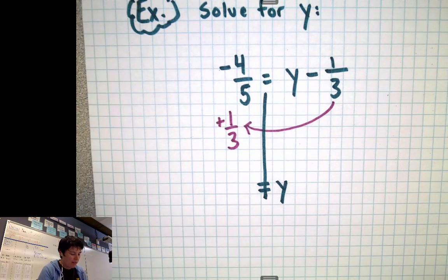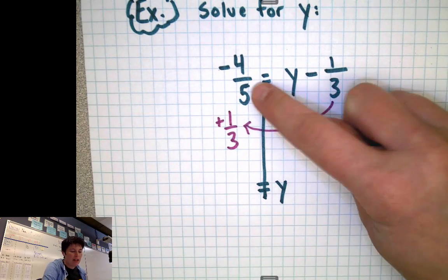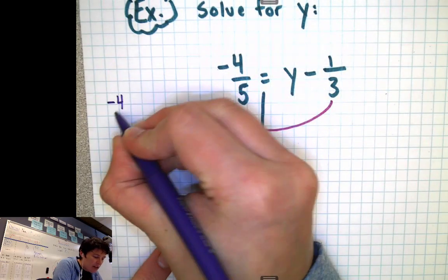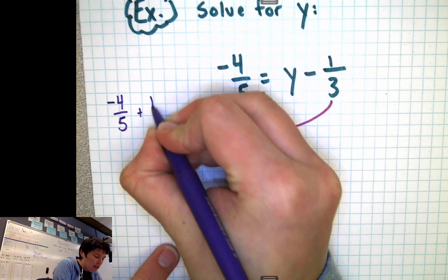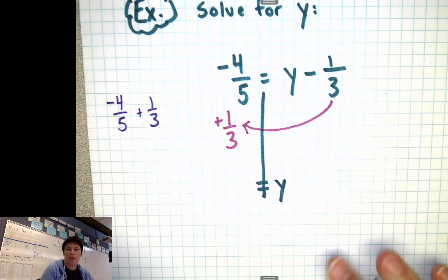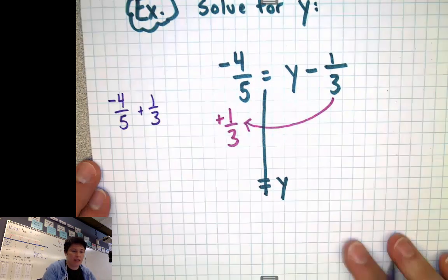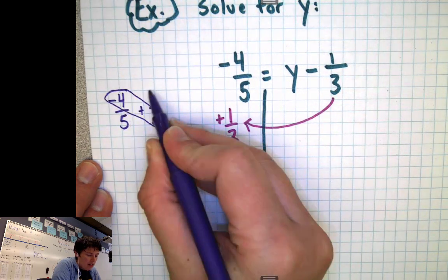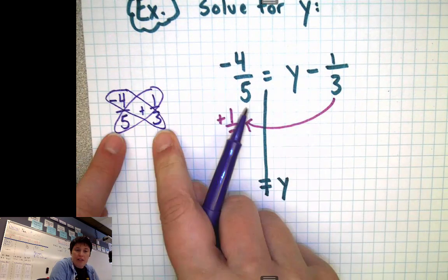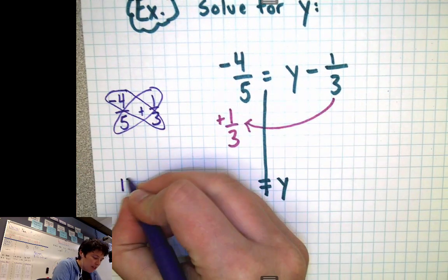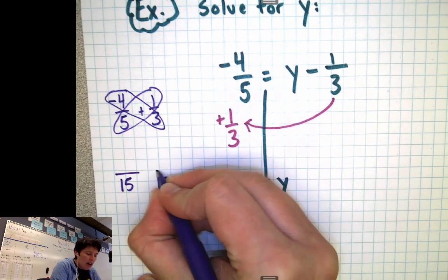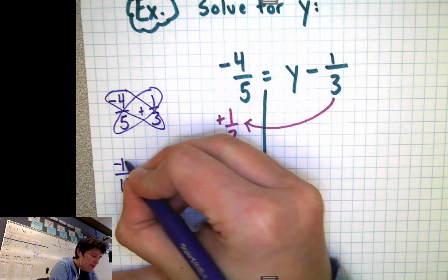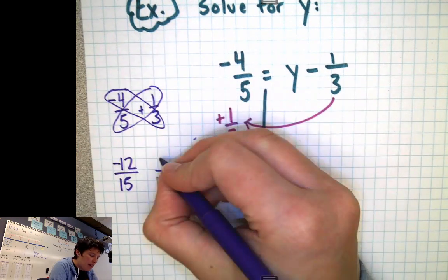So the math we need to figure out is what's negative 4/5ths plus 1/3rd. Same problem as earlier. We don't have common denominators. So we're going to butterfly this thing. We're going to get our common denominator of 5 times 3, which is 15 and 15. And then on top, negative 4 times 3, that's negative 12.